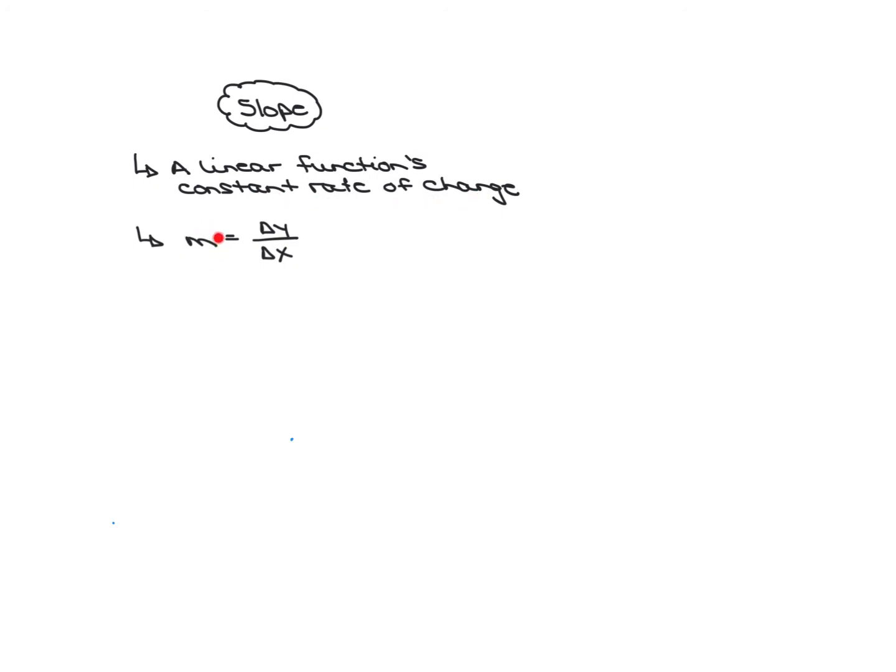You already know that slope is another way of saying a linear function's constant rate of change. We use the variable m for slope, and slope is the rate of change where we look at the change in y between two y values and compare that to the change in x between two x values.